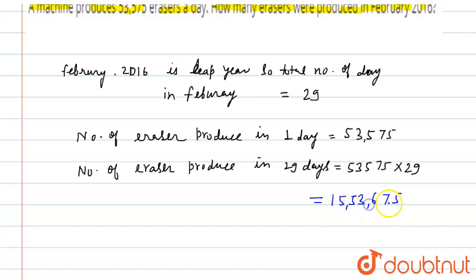This will be equal to a total of 15,53,675. Total erasers will be produced in February 2016 is 15,53,675. This is our answer. Thank you.